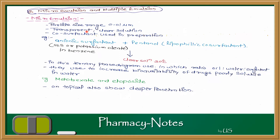If we create Micro Emulsion, we have to use a co-surfactant in preparation. For example, if we talk about anionic surfactant, when pentanol and lipophilic co-surfactant is added, a clear solution is created, in which we have to use SLS and potassium oleate solution in benzene. Mostly, the concentration of Micro Emulsion systems will be found in the ternary phase diagram.